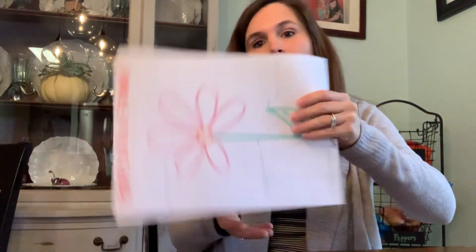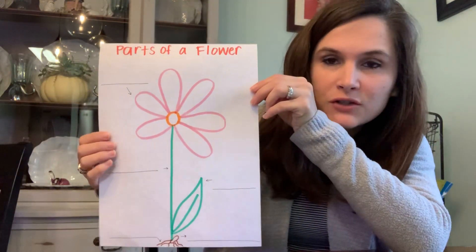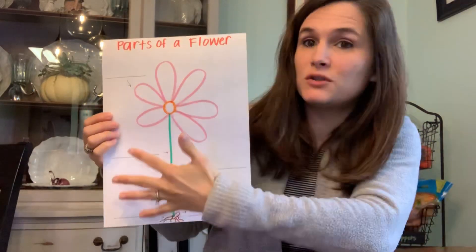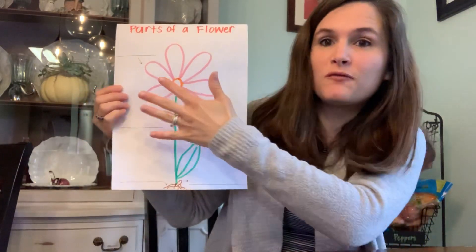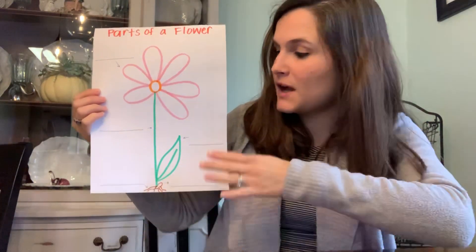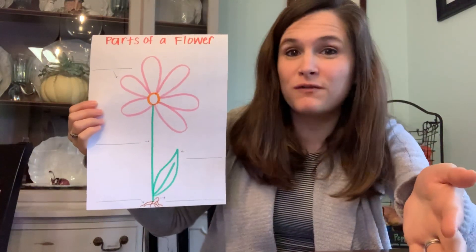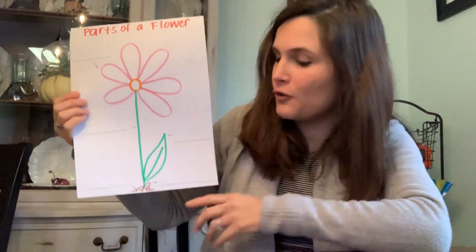To start our study on plants, today we are going to talk about what parts there are to a flower. I'm going to start by showing you our picture here. Normally we would do this as a whole class, but I'm going to walk through it together so you can follow along with your sheet at home.